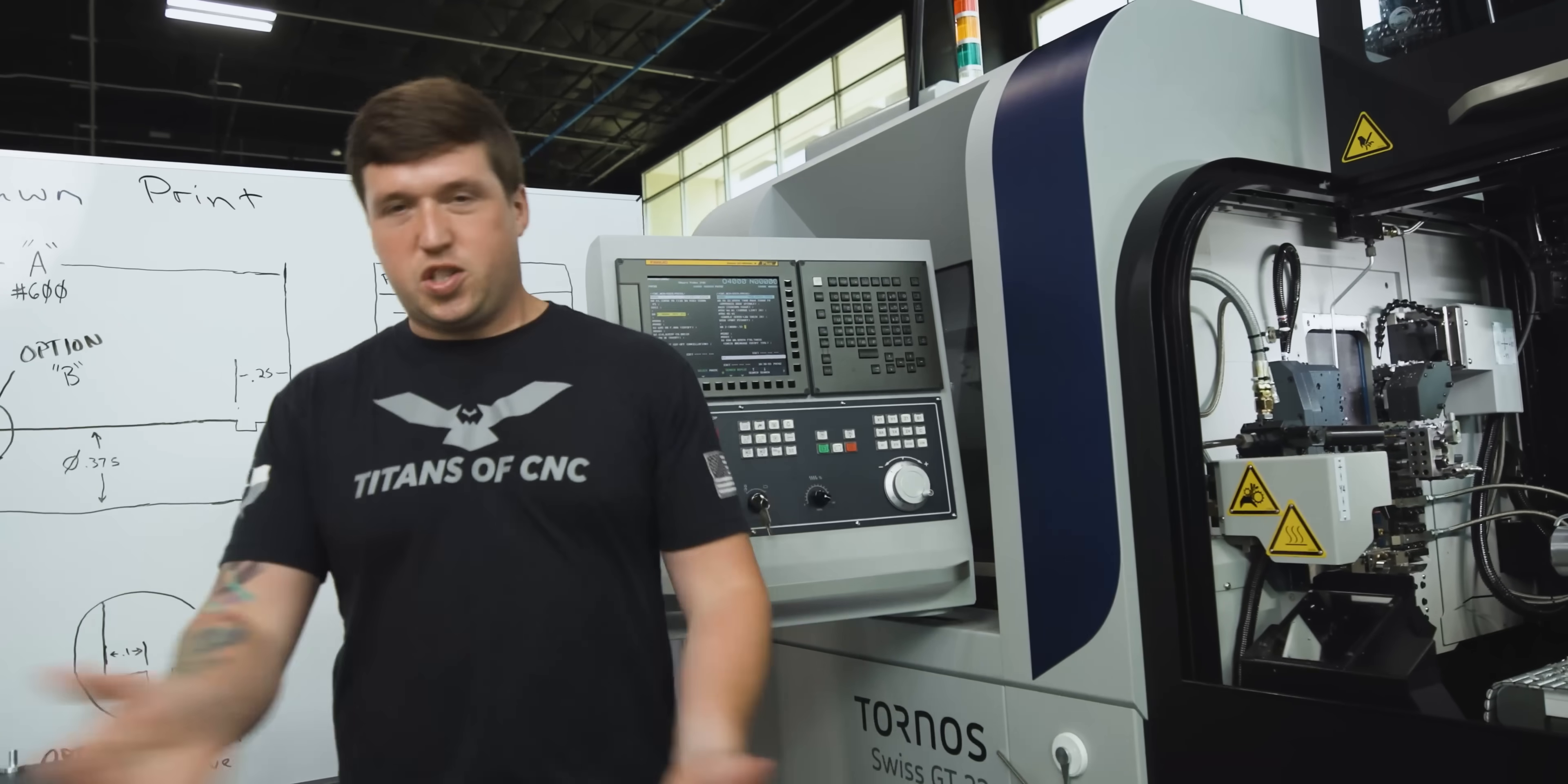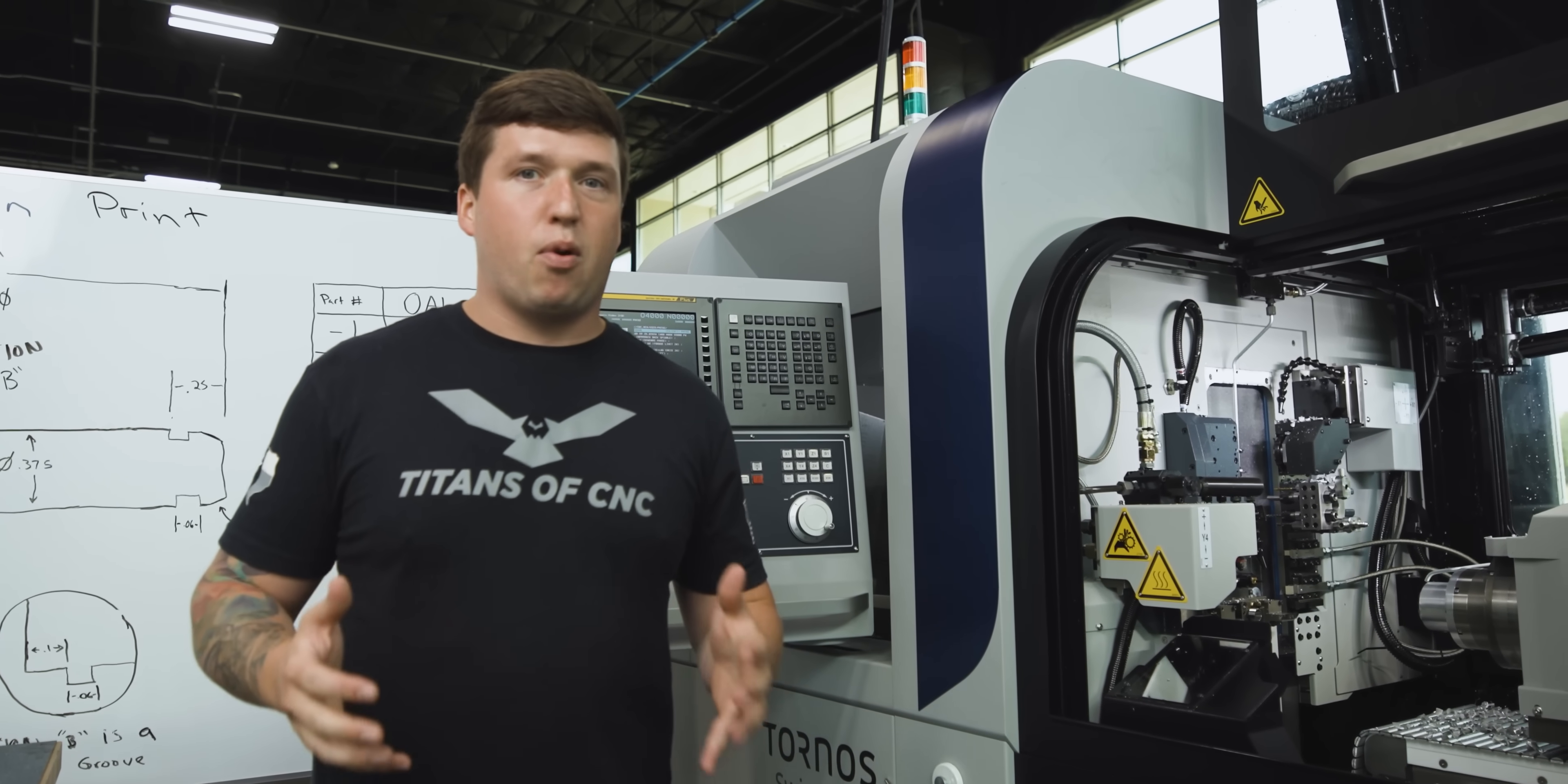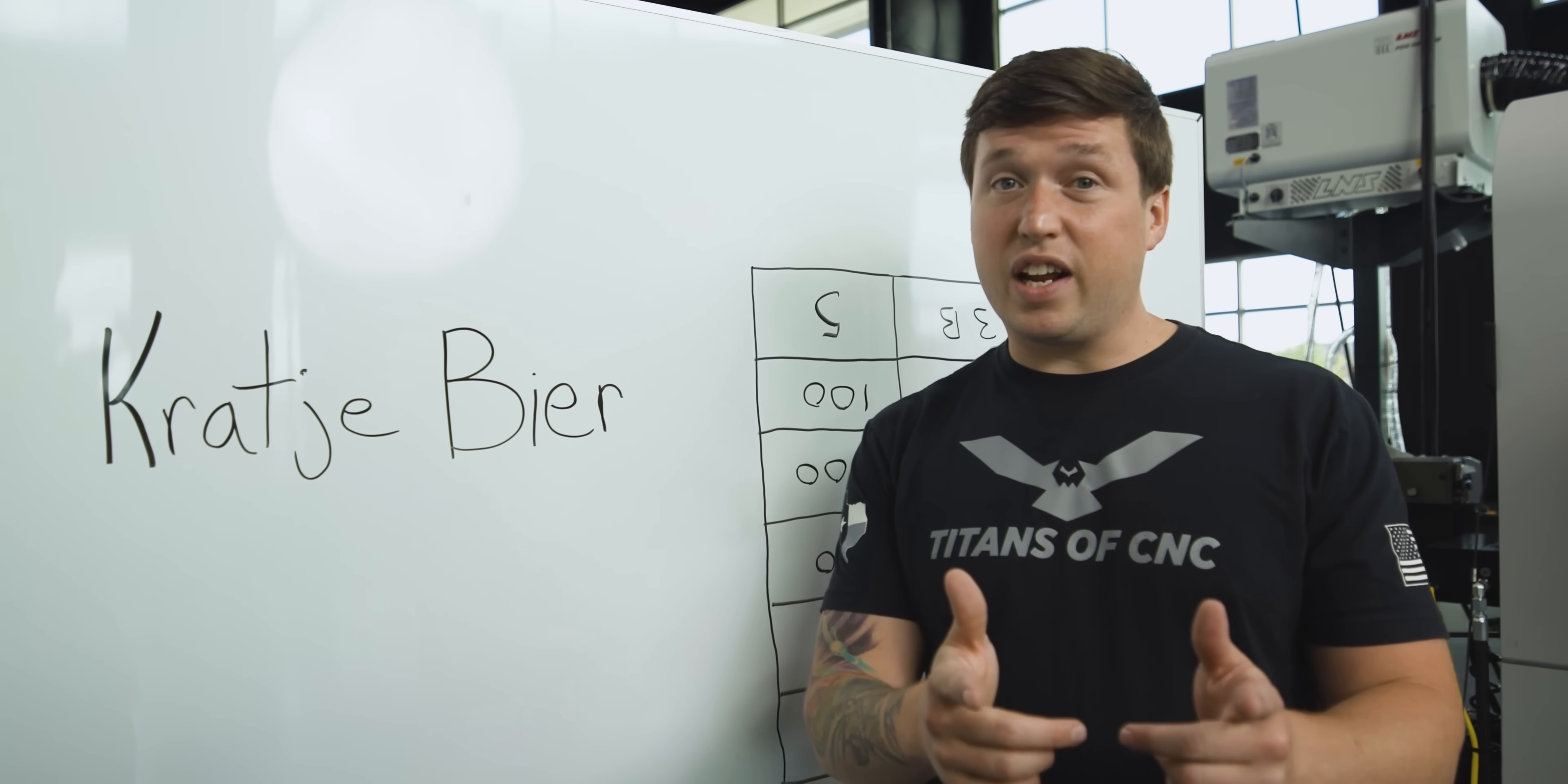You see how simple that is? This is why you want to learn macros, people. It will make your life wildly easier. There's nothing difficult about what I just explained, and you can have six parts in one program. A big reason why I think this is important is because stuff like this happens: you have your customer who gives you a list of things to quote, so he'll send you this list.